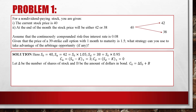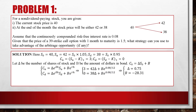We let delta be the number of shares of stock and B the amount of dollars in bond needed to construct the replicating portfolio. C0 is the theoretical price: C0 = delta × S0 + B. In the up case, CU = delta × e^(δH) × SU + B × e^(RH). Here delta (dividend) is 0, R is 0.08, and H is 1/12 because it's calculated on one month. We form a linear system: 3 = 42δ + B × e^(0.08/12).